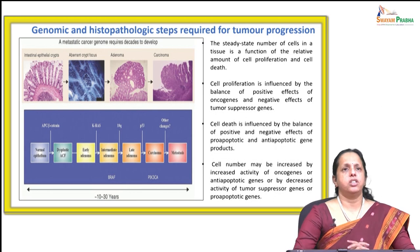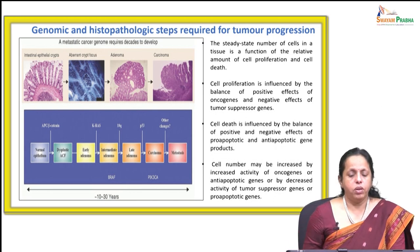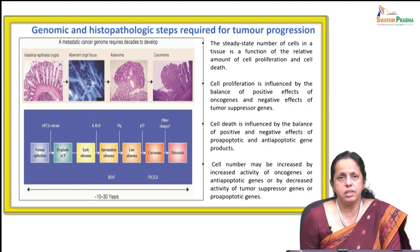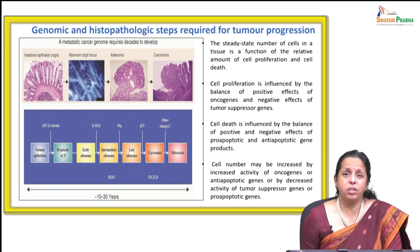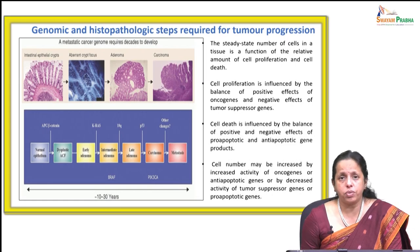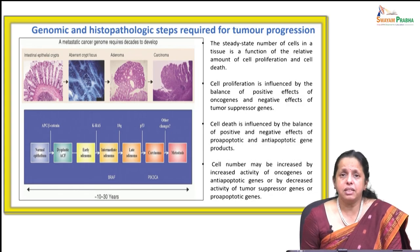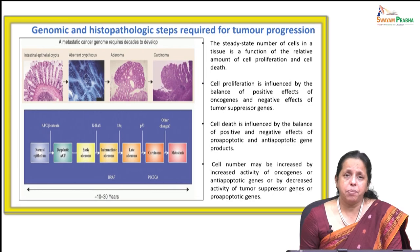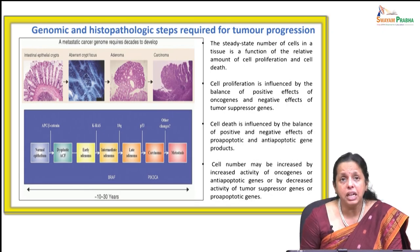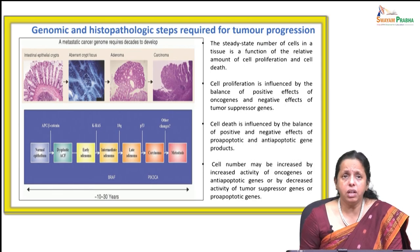Here we will see the genomic and histological steps required for tumour progression. There is always a steady state of cell number homeostasis to be maintained. Cell number proliferation is influenced by the balance of the positive effects of oncogenes and the negative effects of tumour suppressor genes. Cell death is also influenced by the balance of pro-apoptotic and anti-apoptotic gene products. Cell number may be increased by increased activity of oncogenes or by decreased activity of tumour suppressor genes or pro-apoptotic genes.